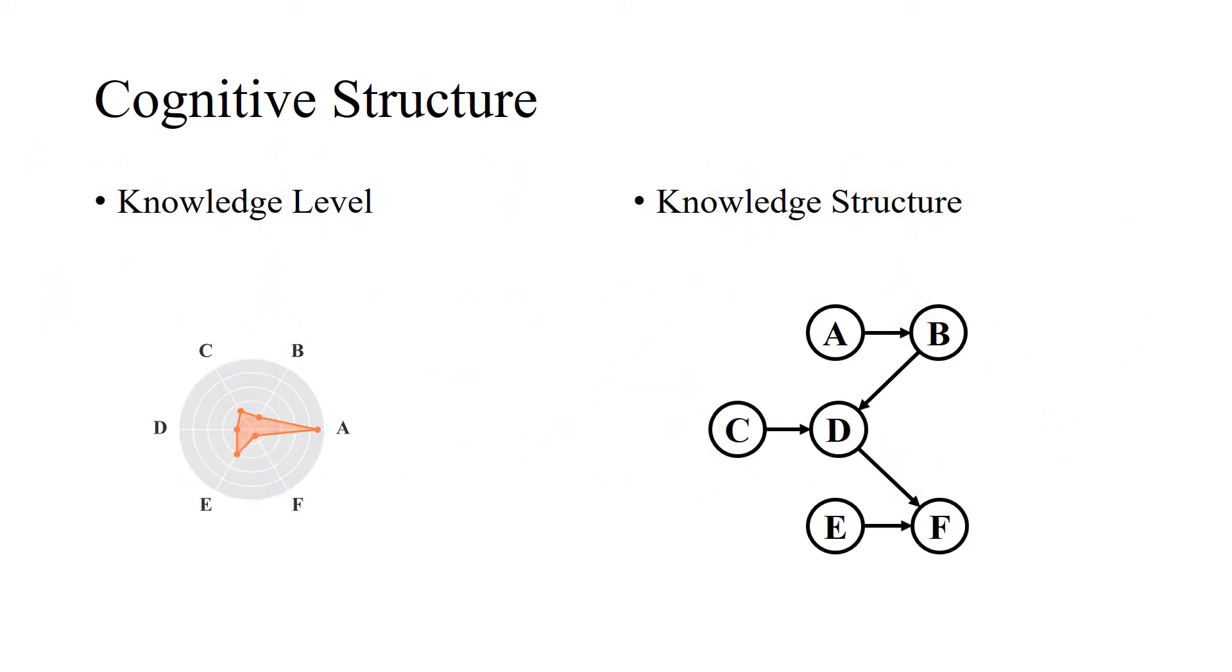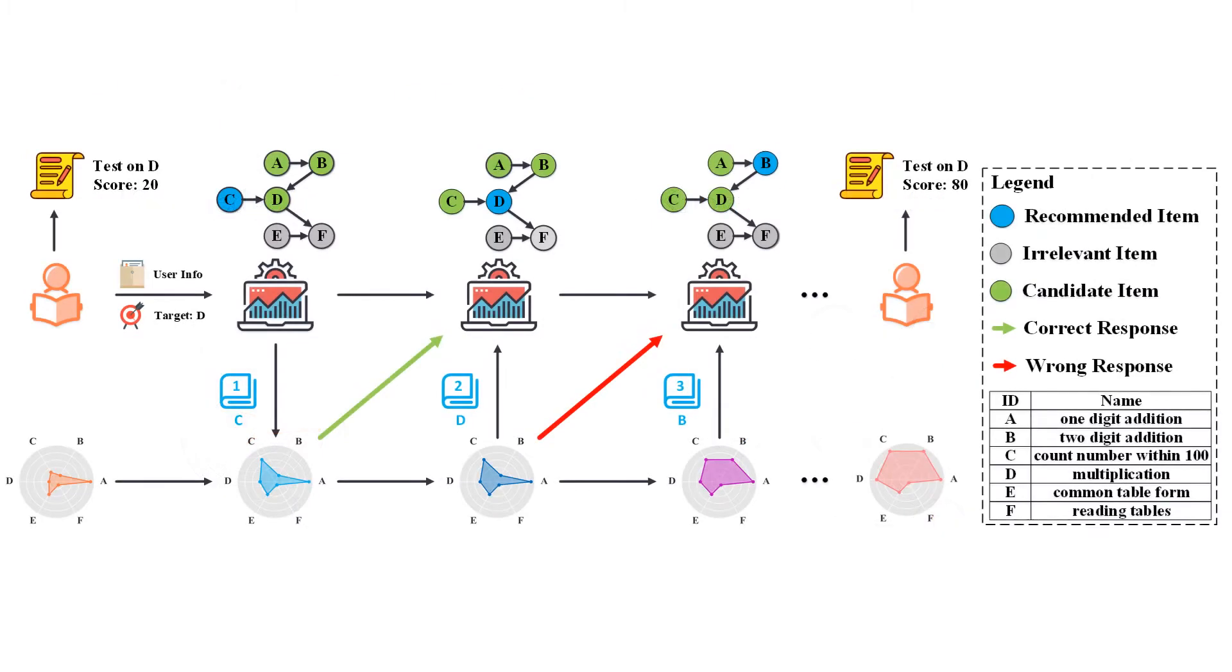The cognitive structure describes the qualitative development of knowledge and contains two parts: knowledge level of learners and knowledge structure of learning items. The knowledge level reflects the masteries on learning items which keeps evolving and cannot be observed directly. Meanwhile, the knowledge structure captures the cognitive relations among the learning items.